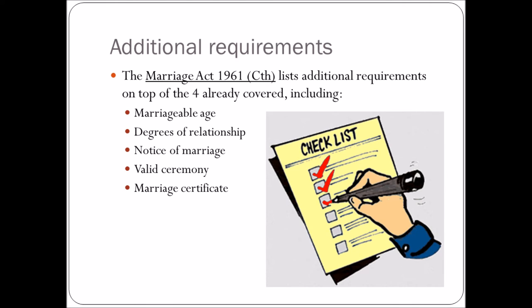There are also some additional requirements. The Marriage Act sets out a few more: you must be of marriageable age, it specifies how many degrees of relationship are allowed — for example, you can't marry your sibling — it says how much notice you must give, you must have a valid ceremony, and you must document it with a certificate.